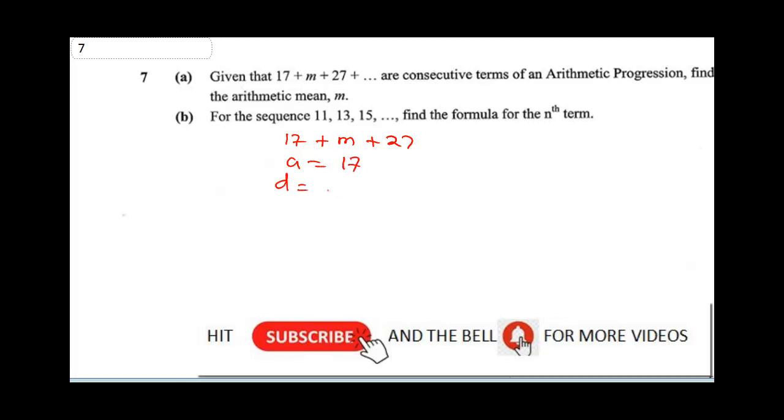Our common difference is going to be M minus 17. And also, our common difference can also be 27 minus M. From here, we can equate the common difference. Since this is equal to this, we can now say M minus 17 is equal to 27 minus M.